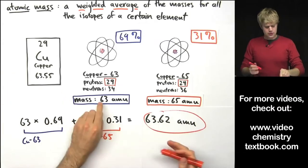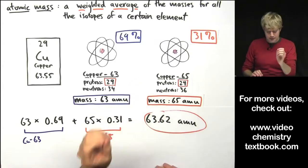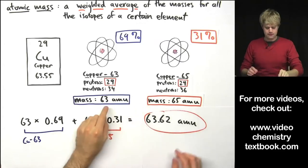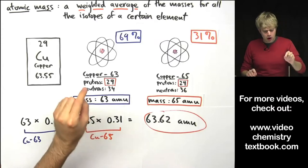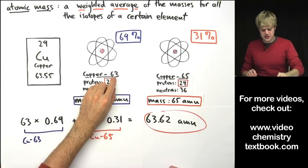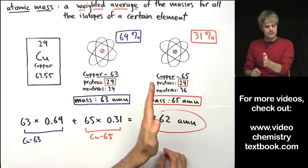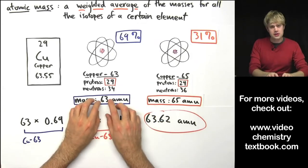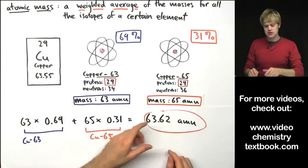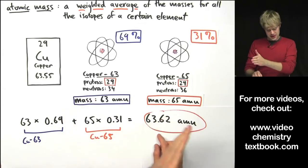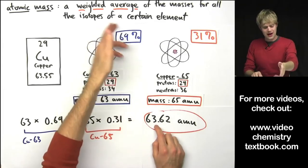63 and 65. If we did a regular average, we would come up with a number that was right in the middle, 64. But there are a lot more of the 63's. So that's going to mean that our weighted average isn't going to be right in the middle. It's going to be closer to 63. And that's exactly what we see.